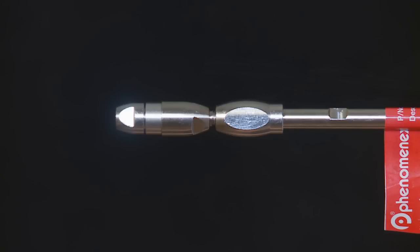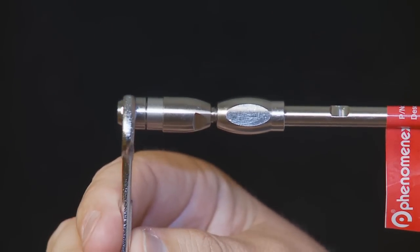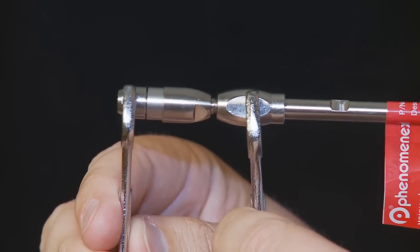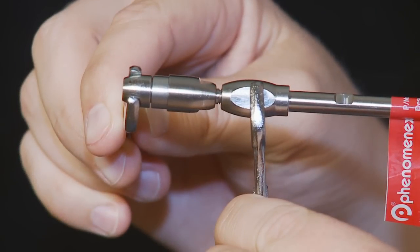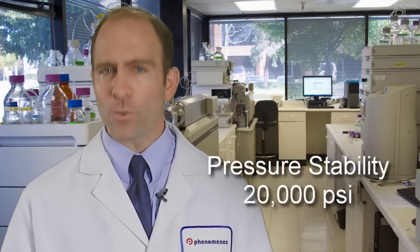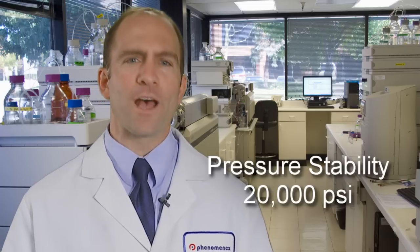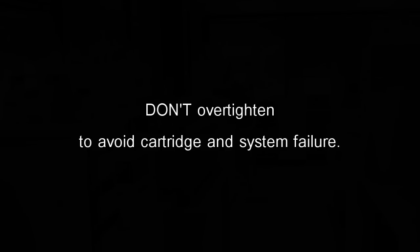Now, let's tighten these parts together to make sure they're leak-free. Place one 5-16th inch, or 8mm wrench, on the flat area of the Security Guard Ultra cartridge. Place a second wrench on the end nut of the column. Turn the wrench on the Security Guard Ultra cartridge in a clockwise direction. Do not turn the wrench on the column. About 15 psi of torque is sufficient to seat the ferrule of the holder to the column and provide a pressure stability of up to 20,000 psi or 1,378 bar. Be careful not to over-tighten, as this may cause cartridge and system failure.